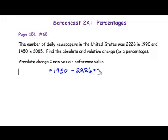Now, when this subtraction is done, note that it will give us a negative answer. That's because circulation has actually dropped in this case, and that difference, that drop, is 776 newspapers. So that is the absolute change. We're going to be using the absolute change in the next segment of the problem.